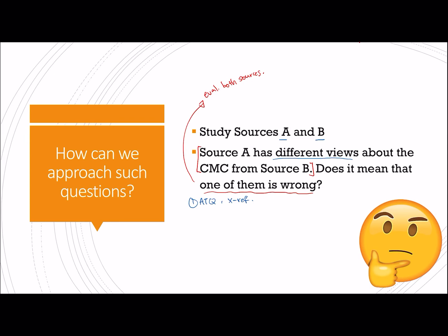Sources A and B are different in showing, let's say for example, who the victor, so the winner of the Cuban Missile Crisis is. And then give me a reasoning.